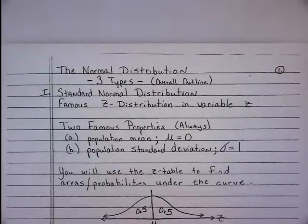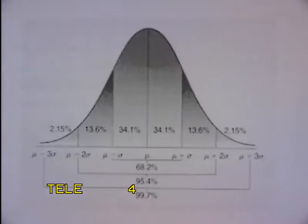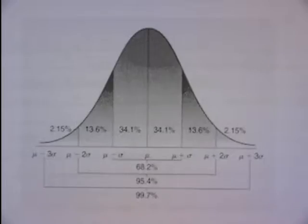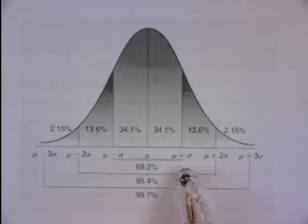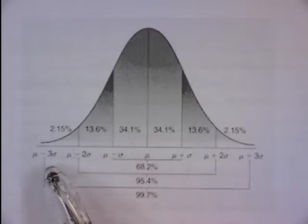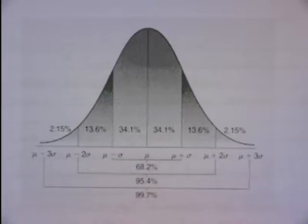All normal distributions satisfy the famous empirical rule. For a normal distribution, 68.2% of the data falls within one standard deviation of the mean, 95.4% within two standard deviations, and 99.7% within three standard deviations. Mu represents the population mean and sigma the population standard deviation. So that's mu plus or minus one sigma, mu plus or minus two sigma, and mu plus or minus three sigma. These percentages are guaranteed for a normal distribution.